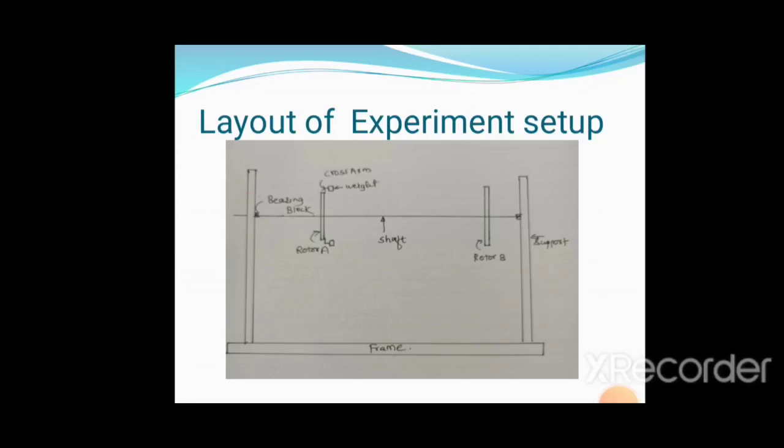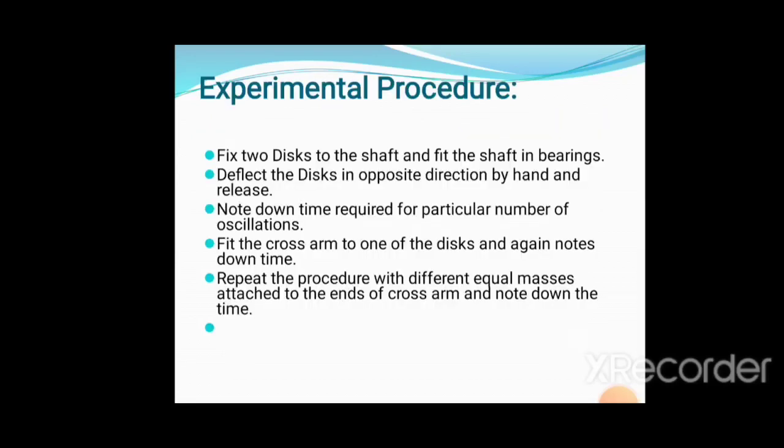The experimental procedure: fix two discs to the shaft and fit the shaft in the bearings. Deflect the disc in opposite directions by hand and release. Note the oscillations with a stopwatch. The objective is to find the natural frequency of torsional vibration of the two rotor system and find its node.